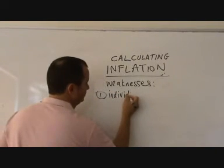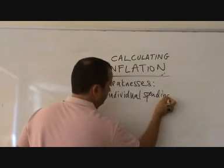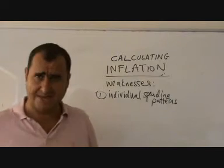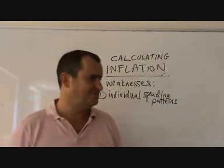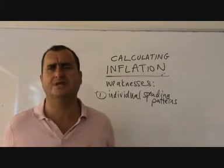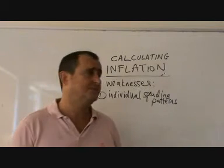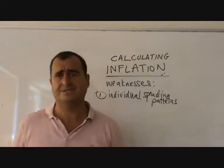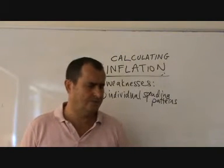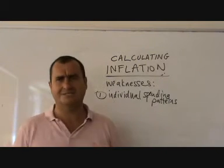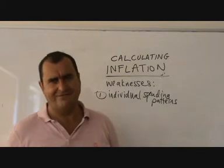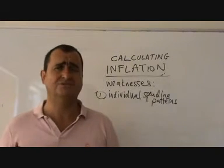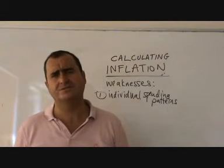The first weakness is individual spending patterns. Everyone has their own way of spending their money and no two people are the same. There might be an average, but we don't all conform to this sort of married couple, 2.4 children. I spend no money on dog food because I don't have a dog, but some people do and will be affected if the price of dog food goes up. Neither do I smoke, so when tobacco changes price some people suffer from inflation, but I don't. Everyone spends their money differently, so the published inflation figure for the average basket might not reflect your own personal inflation rate, which could be higher or lower than the average.